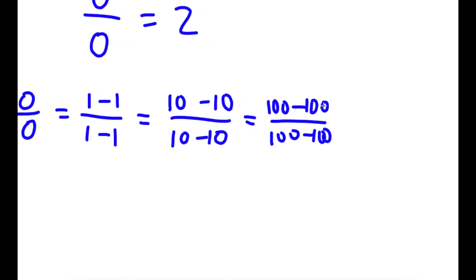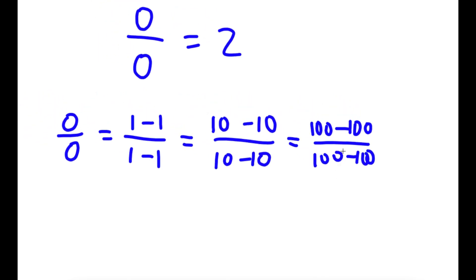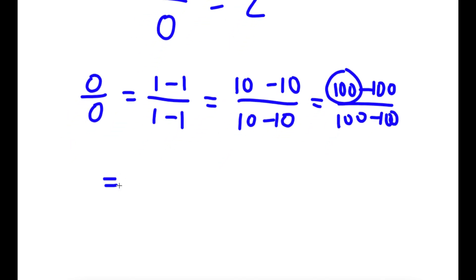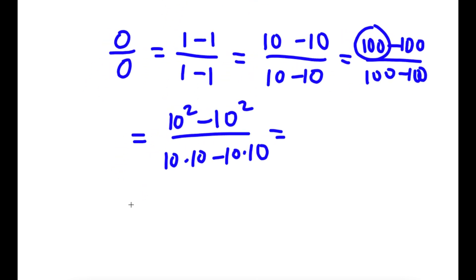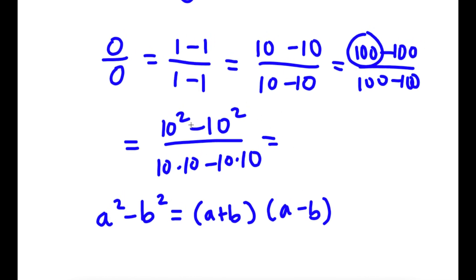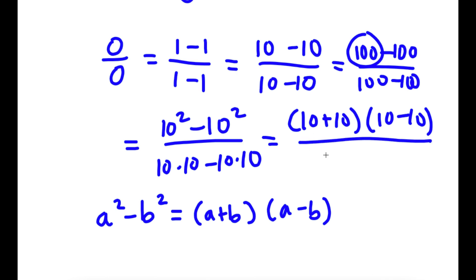Now I'm going to simplify 100 minus 100 over 100 minus 100. So 100 is the same thing as 10 squared, so the numerator 100 minus 100 is the same thing as 10 squared minus 10 squared. For my denominator, I'm going to write 10 times 10 minus 10 times 10. Now if I have something in the form a squared minus b squared, this is equal to a plus b times a minus b. So 10 squared minus 10 squared equals 10 plus 10 times 10 minus 10. And for my denominator I'm going to factor out 10, so I get 10 times 10 minus 10. This is completely legal — I'm just using properties of exponents.